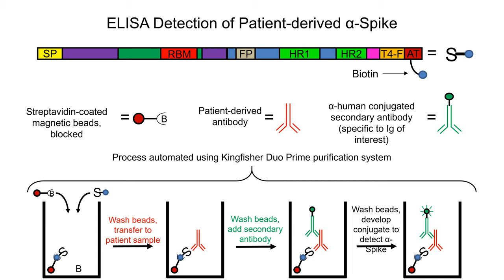Currently, commercial assays will be looking at IgG and IgA, but IgA may be very important, especially since this virus predominantly replicates in the beginning in the oral cavity. The ELISA assay will be developed shortly. Thank you.